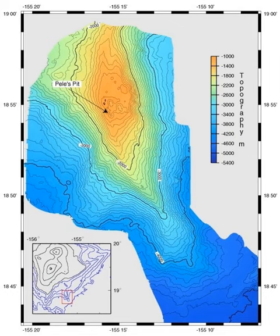A bathymetric chart is the submerged equivalent of an above-water topographic map. Bathymetric charts are designed to present accurate, measurable description and visual presentation of the submerged terrain. Bathymetric surveys and charts are more closely tied to the science of oceanography, particularly marine geology, and underwater engineering or other specialized purposes.